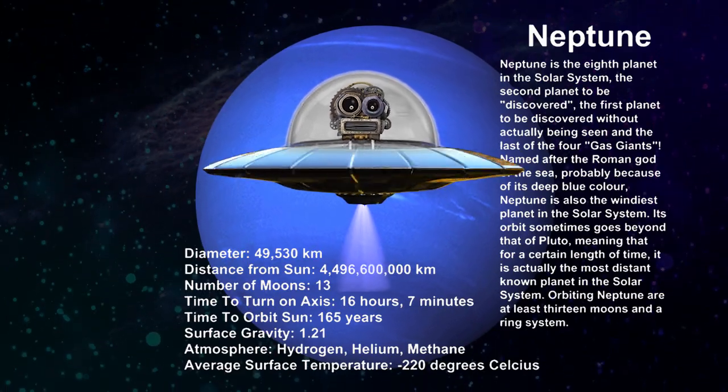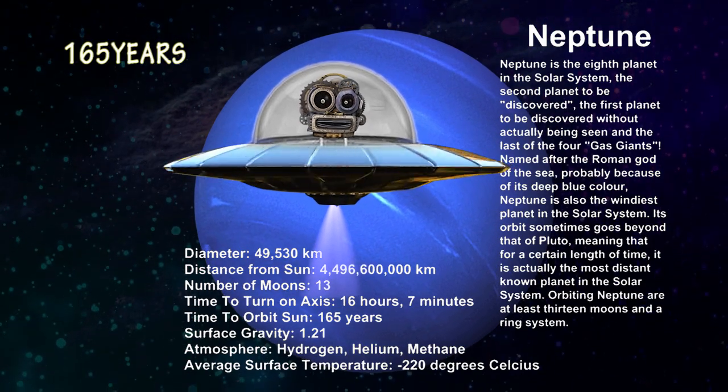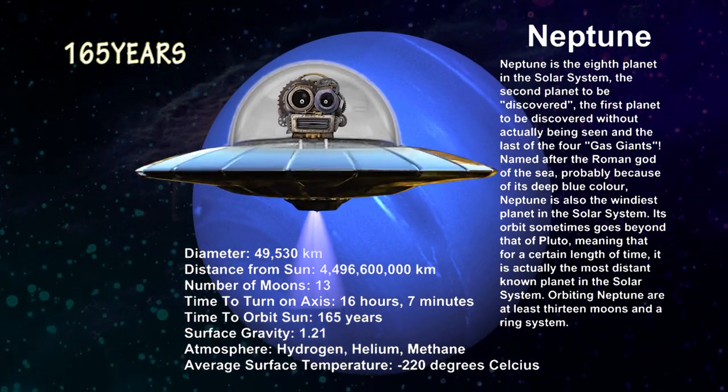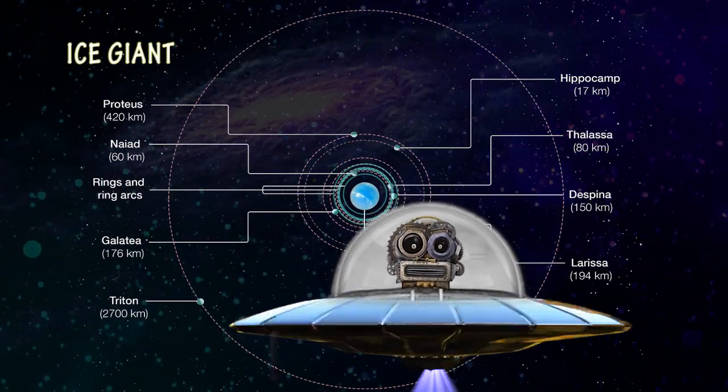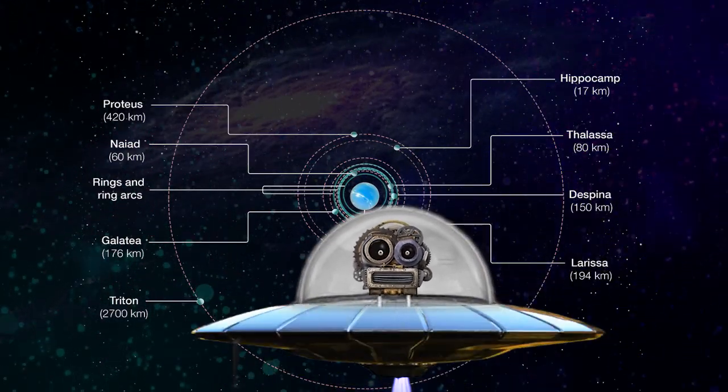Neptune takes about 165 Earth years to revolve around the Sun. It is also known as the Ice Giant, and it has about 13 moons.